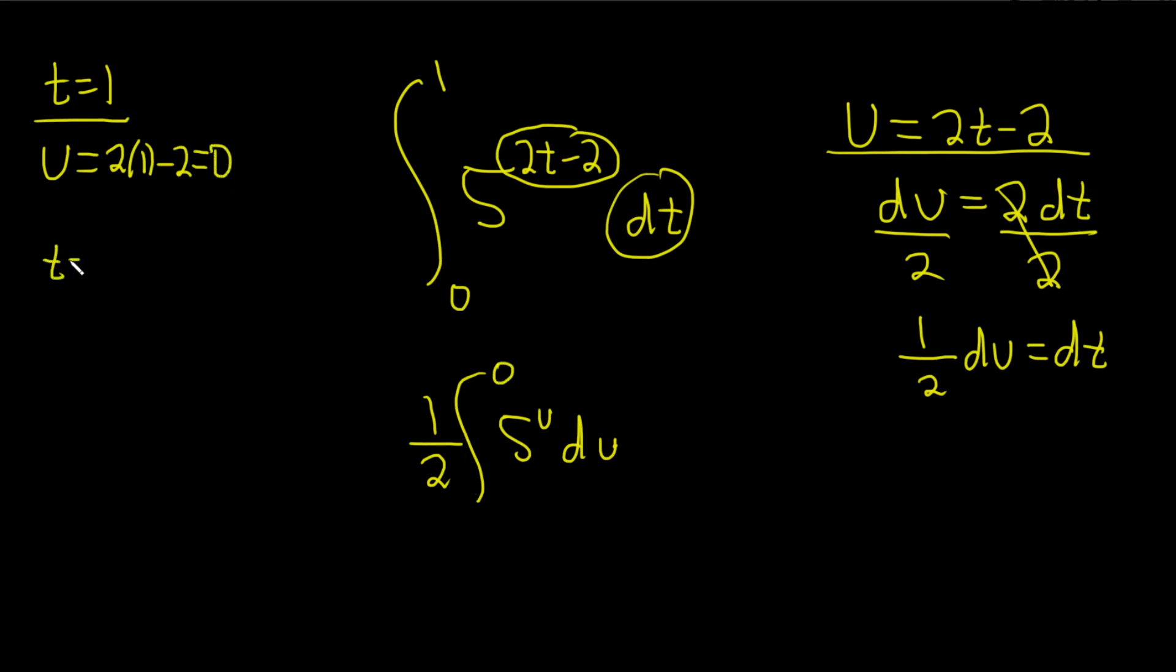When t equals 0, we get u equals 2 times 0 minus 2. So we get minus 2. So this becomes minus 2.